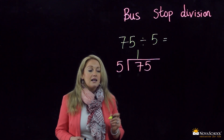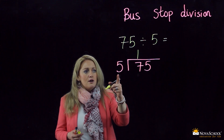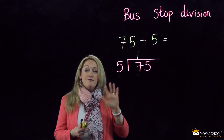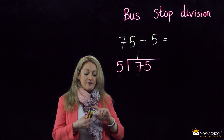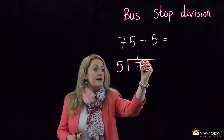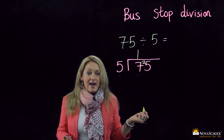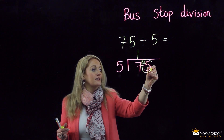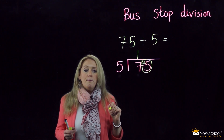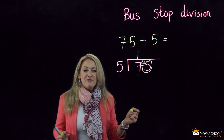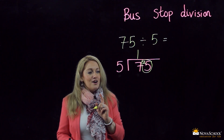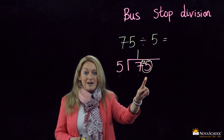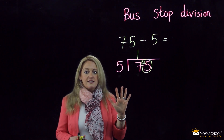Then we look and we think: five goes into seven once, and we are left with two — because five, six, seven — we have two. So we place the two here next to the five and we make a new number. I'm placing a circle around my new number. What's my new number? 25.